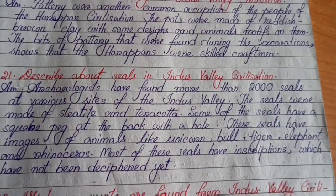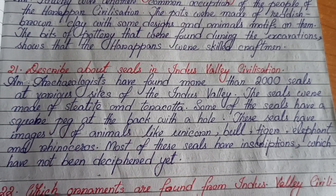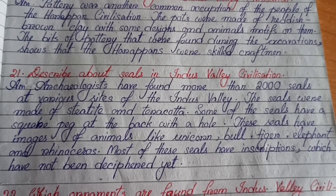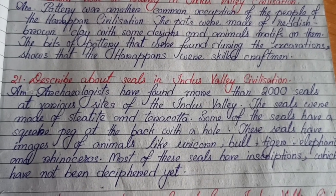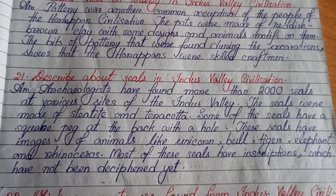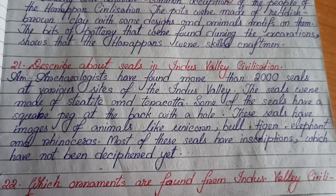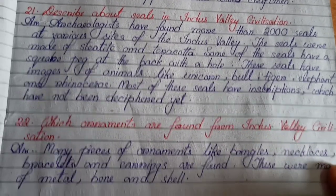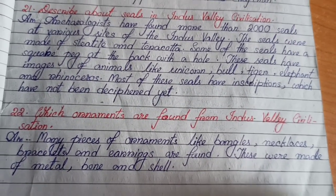Describe the seals of the Indus Valley Civilization. Archaeologists have found more than 2000 seals at various sites. The seals were made of steatite and terracotta. Some seals have a square peg at the back with a hole. These seals have images of animals like unicorn, bull, tiger, elephant, and rhinoceros. Most seals have inscriptions which have not been deciphered yet.